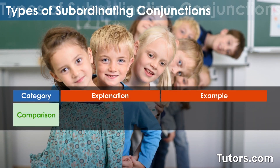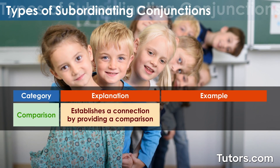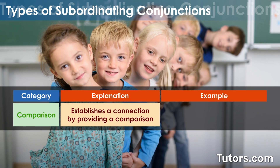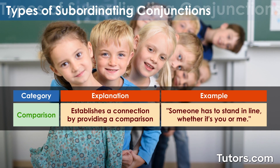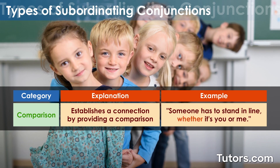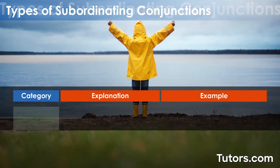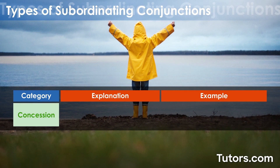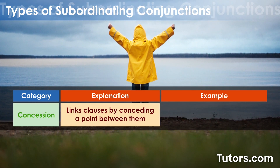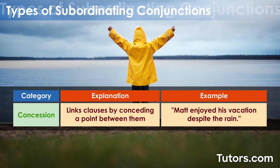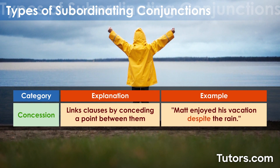Comparison subordinating conjunctions establish a connection by providing a comparison. For example, 'someone has to stand in line, whether it's you or me.' Subordinating conjunctions can also link clauses by conceding a point between them, such as, 'Matt enjoyed his vacation, despite the rain.'